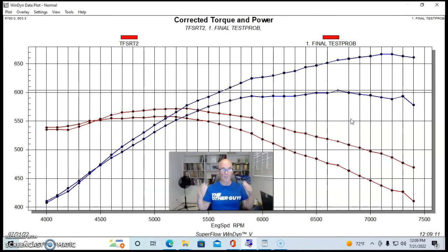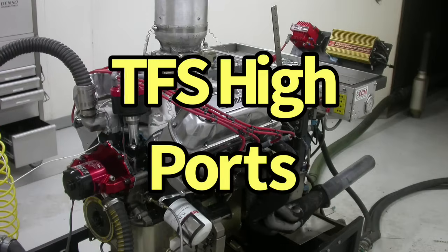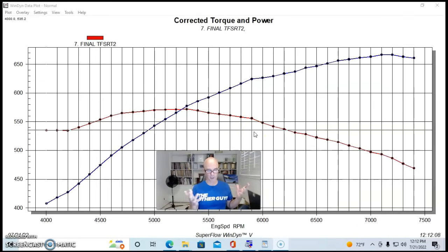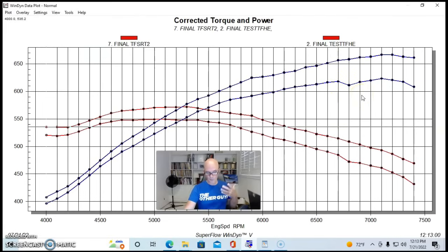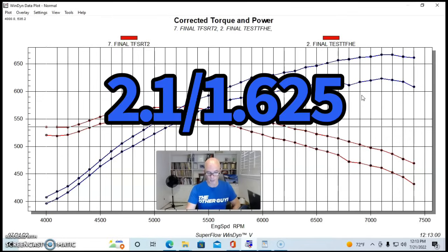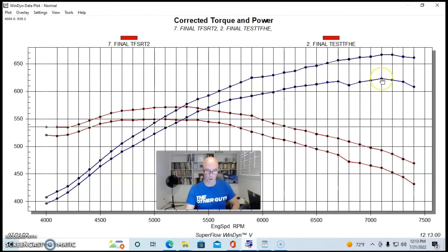Now let's take a look at a set of ported TFS High Port heads. The next set of heads run on our 427 test motor came from the guys at Ford Performance Solutions, and they were a set of CNC ported TFS High Port heads. They flowed fairly well, they flowed 316 CFM on the intake and 246 on the exhaust. They had a 64cc chamber, tied with the Cosi heads for the largest chamber. The compression ratio was 11.86 to 1. These things had a 2.100/1.625 valve package on it, and equipped with those heads it produced 623 horsepower at 7100 and 549 foot-pounds of torque at 5100 RPM.